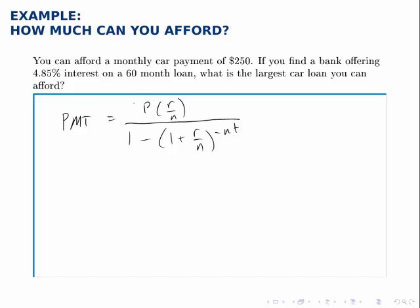So we'll solve for the unknown, P. Filling in the pieces we know, the payment amount is $250. P is the unknown, so we leave it as P. R is the interest rate, 0.0485. N is 12 because we're making monthly payments, or 12 times a year.